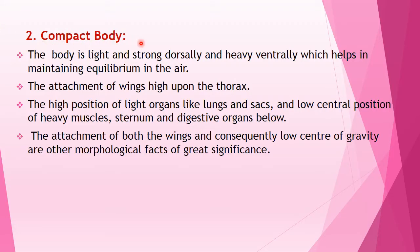The second morphological adaptation is compact body. The body is light and strong dorsally, and heavy ventrally, which helps in maintaining equilibrium in the air. The wings are attached high on the thorax. The high position of light organs like lungs and air sacs, and the low central position of heavy muscles, sternum, and digestive organs lowers the center of gravity, which is of great morphological significance.